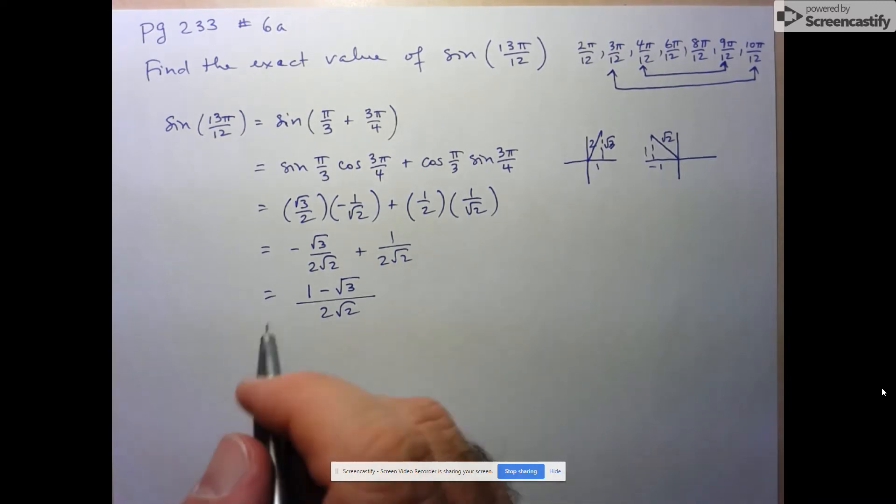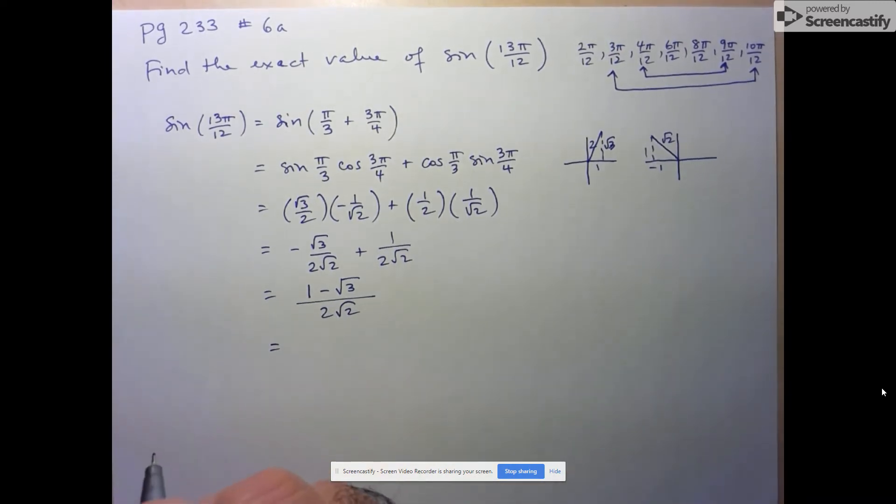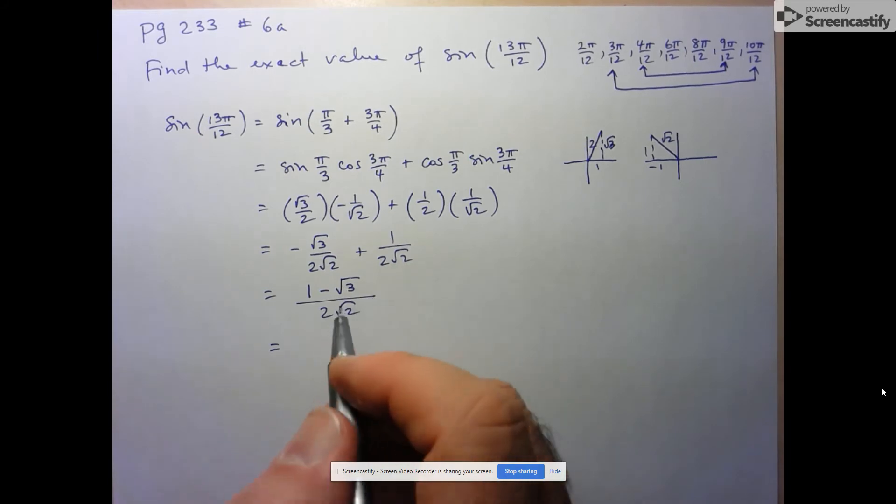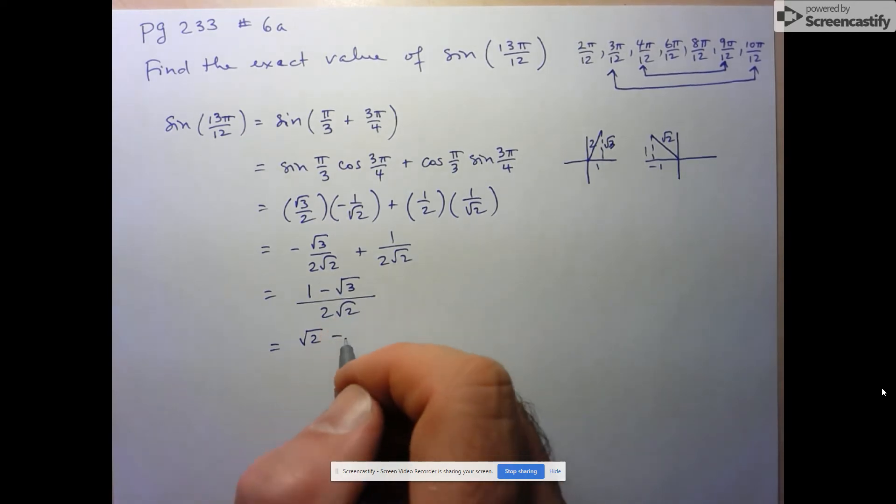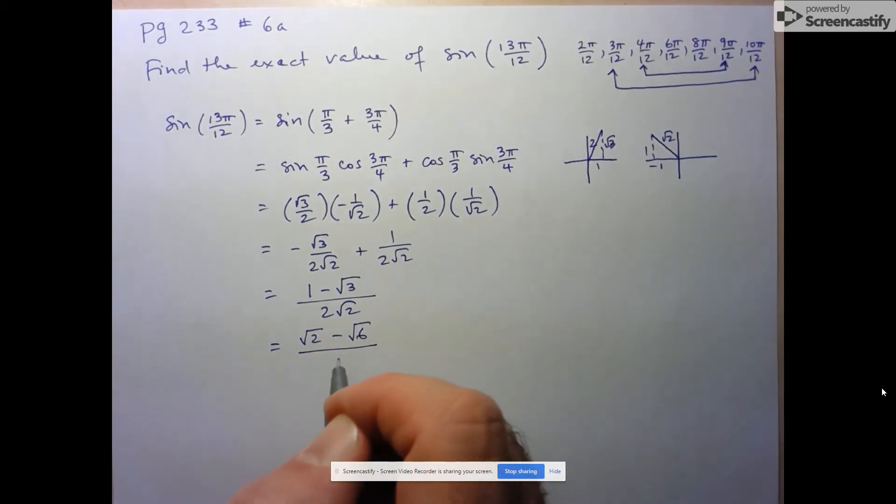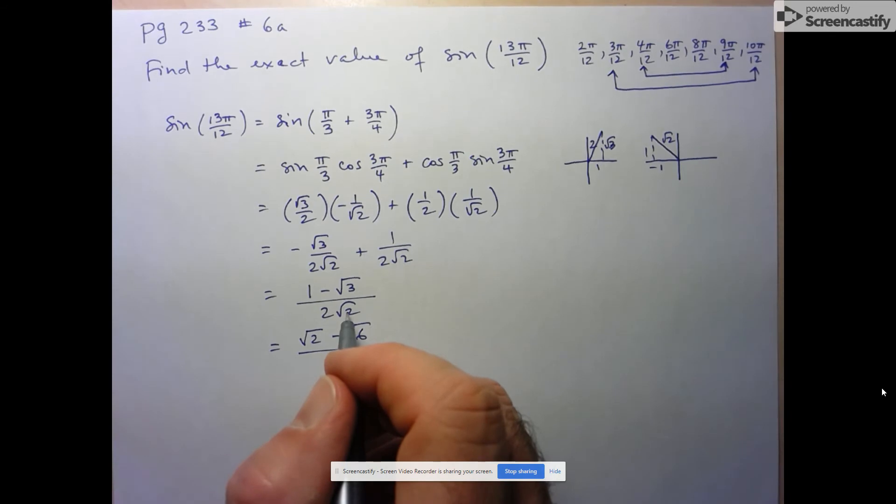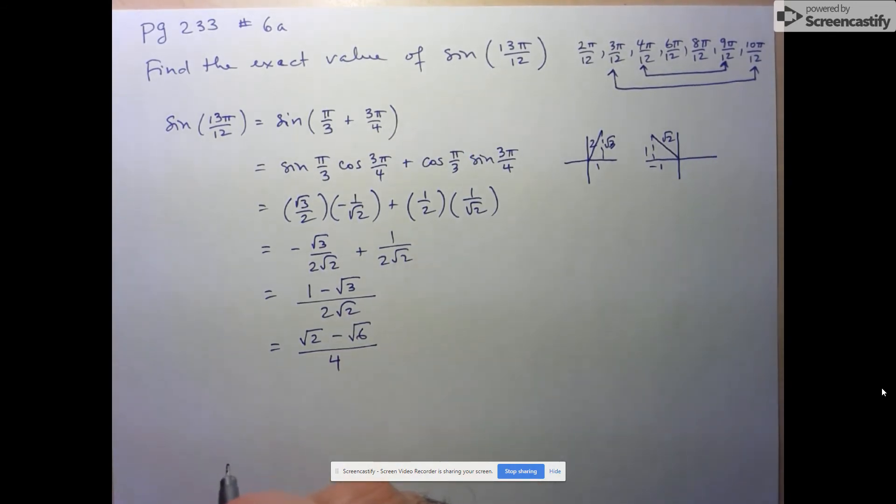I'm perfectly happy to accept this answer. Or if we want to go on and rationalize the denominator, just multiply numerator and denominator by square root of 2. This would be square root of 2 minus root 6 over 4. And there's my final answer.